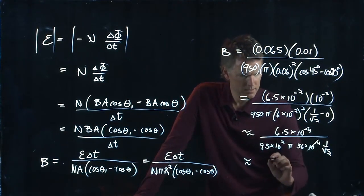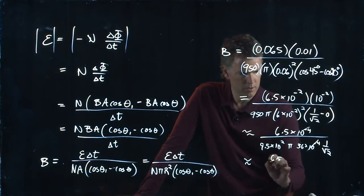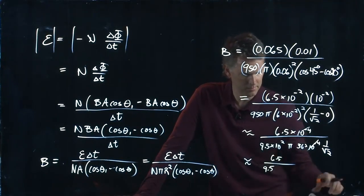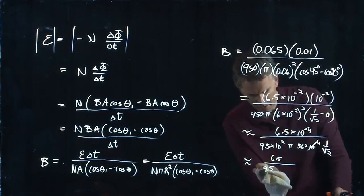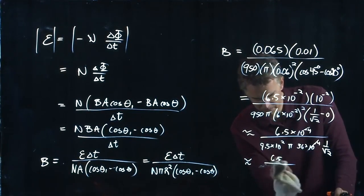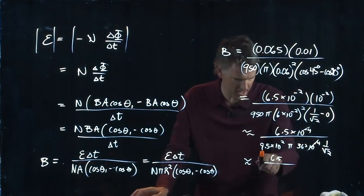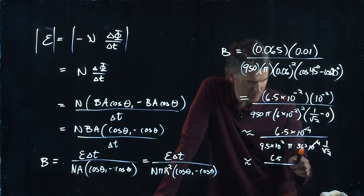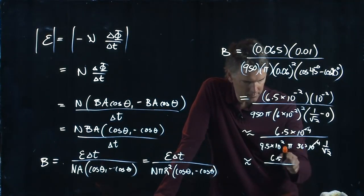We've got 6.5 over this stuff, which is 9.5 times pi times 36. This is a lot of numbers here, but let's keep going. We're going to say this is 10, so this becomes a 10 to the 3, and then we've got pi times 36 - that's got to be really close to 100, right? So that's 10 to the 3 times 10 to the 2, so that's 10 to the 5.